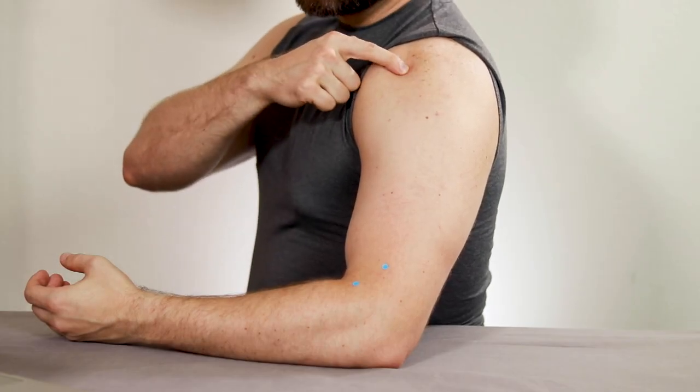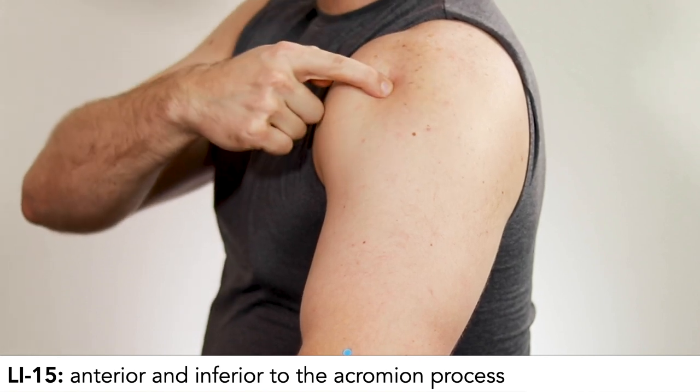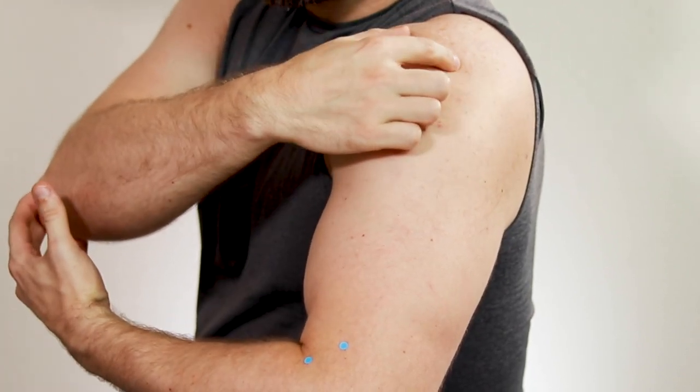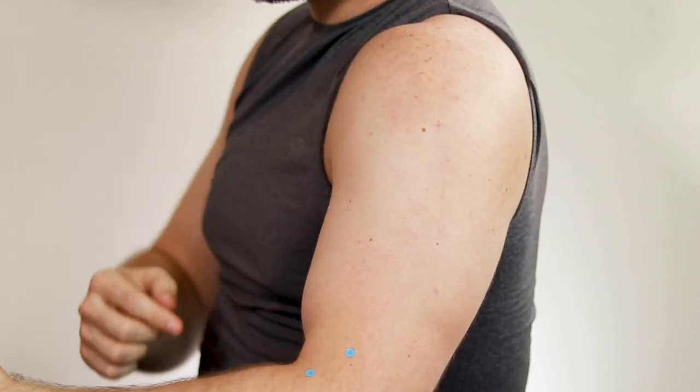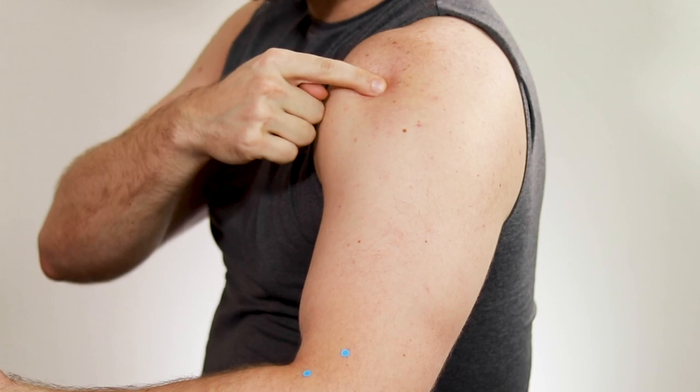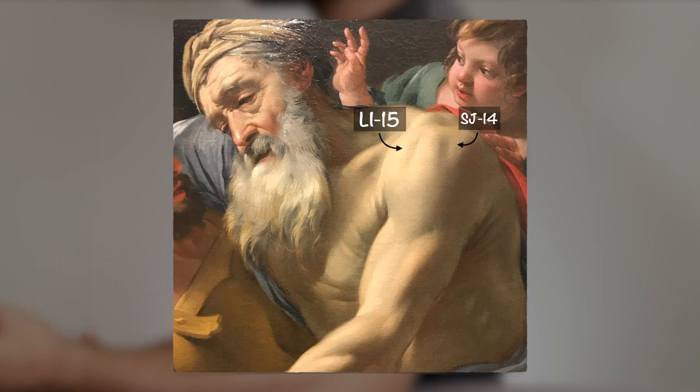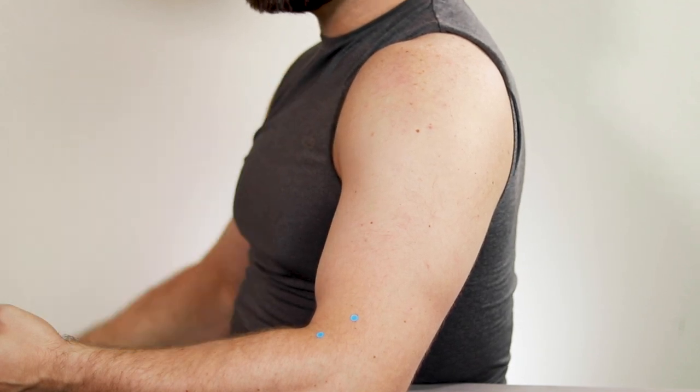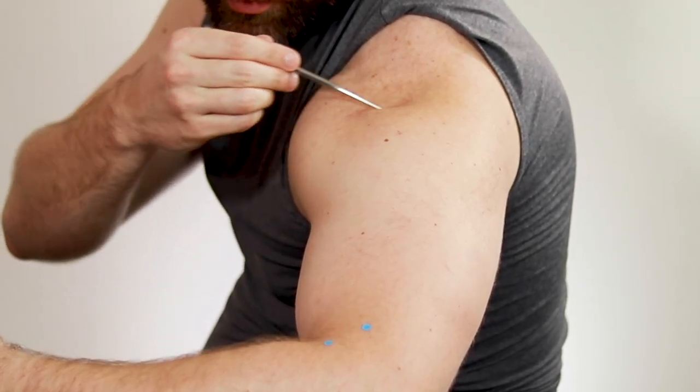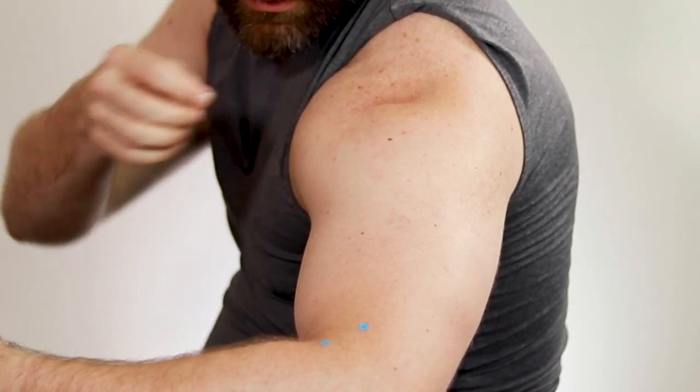Next we're going to skip up to LI15 because we need to establish this line for our points on the upper arm. LI15 is located in the depression anterior and inferior to the acromion process. Basically what's happening here is I have an anterior deltoid coming off the lateral end of the clavicle, a middle deltoid coming off the acromion process, and a posterior deltoid coming off the spine of the scapula. For LI15, we're looking for the depression between the anterior and middle delt right below the acromion process. If you have somebody with really good muscle definition, you can actually see these depressions. The one in front is LI15 and the one in back is Sanjiao 14.